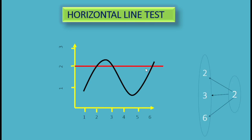The reason is: when a horizontal line from a point in the co-domain meets the curve at more than once, it produces so many pre-images. For one image, we get more than one pre-image, which tells us that it is not a one-to-one function. The one-to-one concept requires that each element has a unique image.